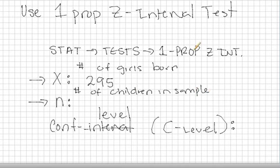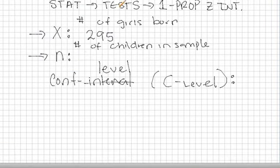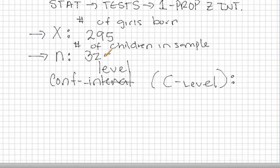So for this particular experiment, there were 325 total babies born. So 325 is going to be our value for N.